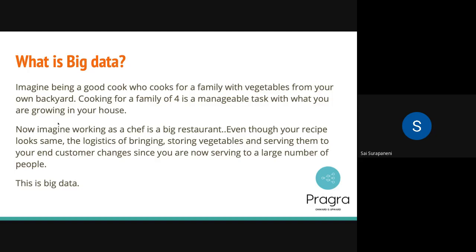Now imagine doing this in a very big restaurant which has at least 100 customers walking in per day, which means you have to do this 200 times — you're scaling it. You were using one banana before; now you have to use 100 bananas, which means you can't grow everything in your backyard. So what you do is use a different set of logistics — you start importing them from a seller. You'll use much bigger storing space, and then serve it to your customer. The key difference is you're doing everything at scale — 200 times. This is ideally the world of big data. If you replace all the fruits and vegetables with data, this is what your real-world problem looks like.